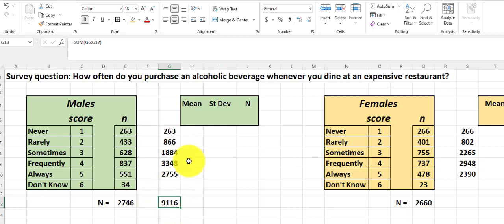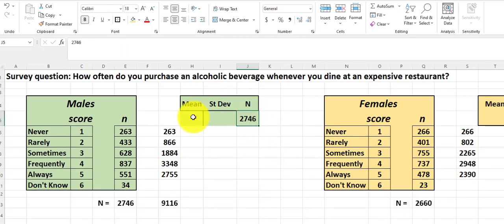First of all, I'm going to move this sample size up here so I can get some working room. So there's our N. So now our mean is going to be equals, the total sample divided by sample size. So that's our mean, 3.32.